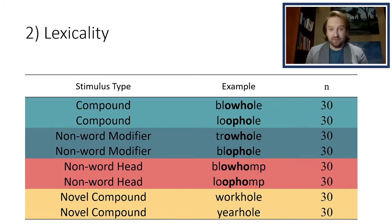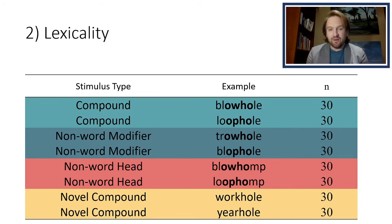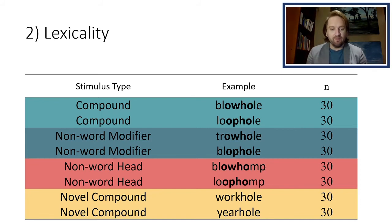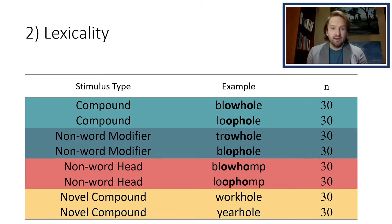Next, we looked at lexicality. Our stimulus set for this investigation included the 60 compounds previously used, as well as 60 non-word modifier compounds — we took the first 60 compounds and modified the first constituent to create a non-word that shared the same letters around the boundary to control for letter effects. We also created 60 non-word head compounds in which we modified the head constituent to be a non-word. So all 120 of these were non-words — the compound itself was a non-word, and either the C1 or C2 was a non-word within the compound. The last set was novel compounds, created by shuffling around the constituents from our real compounds to form new compounds that didn't appear in any database.